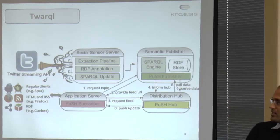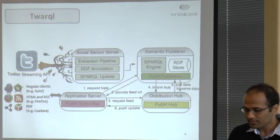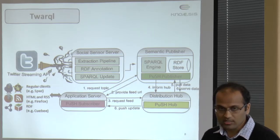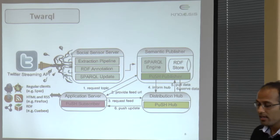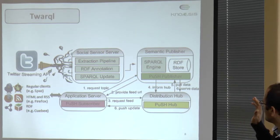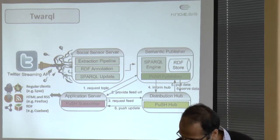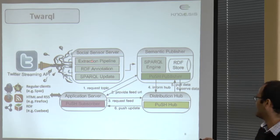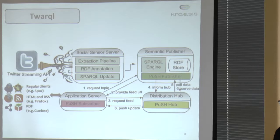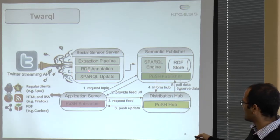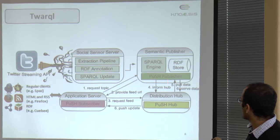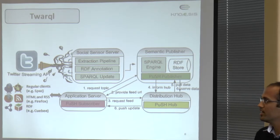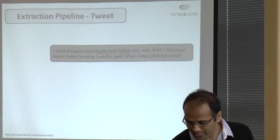This is the architecture of Tworkle — this is the work which we did in 2010. We perform some processing on the Twitter stream in real time for extracting all the data from Twitter. We annotate it using RDF and we have a SPARQL engine. Once we annotate it in RDF, you can put up your own queries on the SPARQL engine, which will provide the relevant data for you.